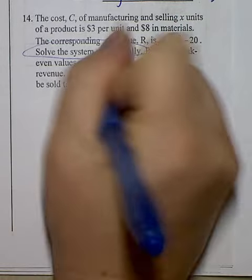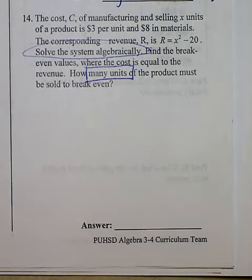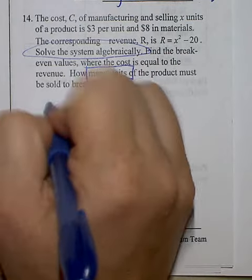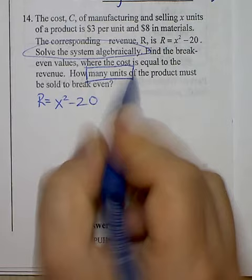And the question is how many units, so they want to know what is X. How many units of the product must be sold to break even? So I have one equation of R equals X squared minus 20, and I have a second equation of C.